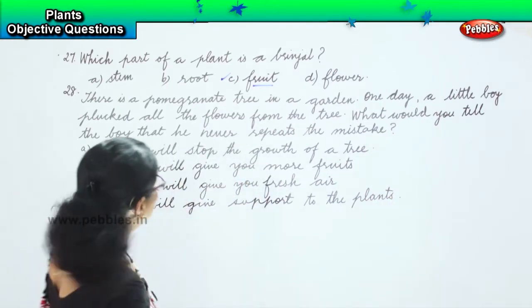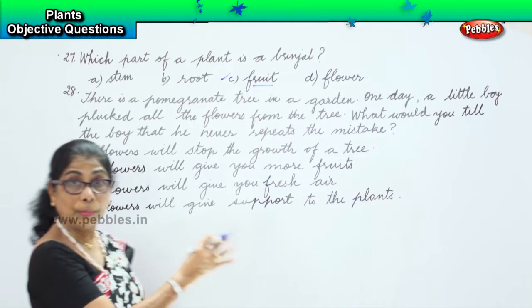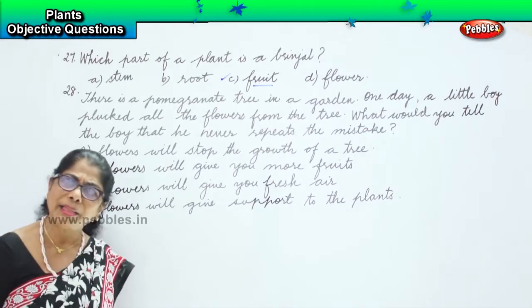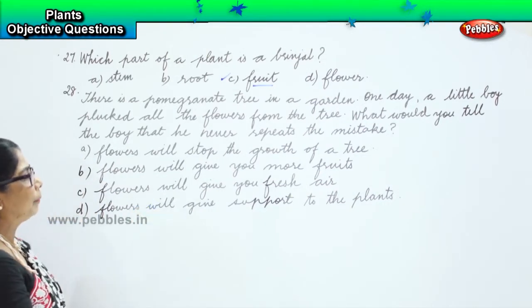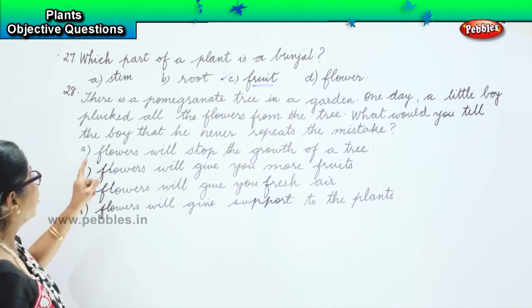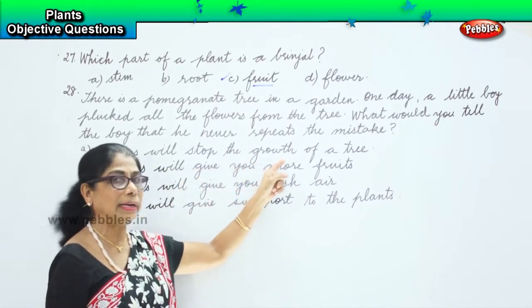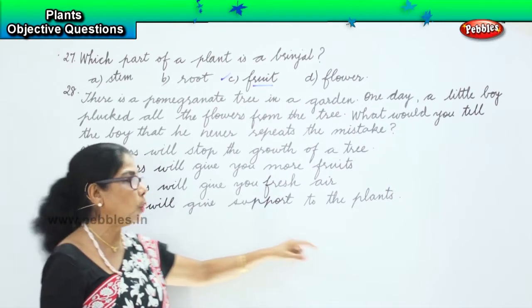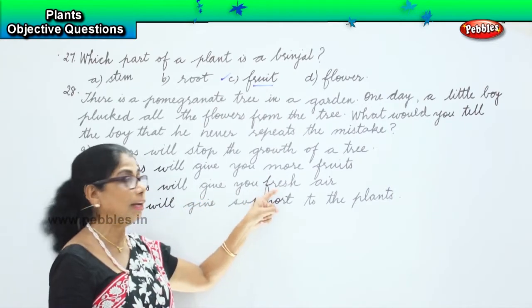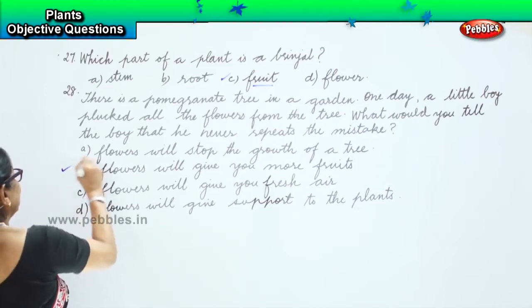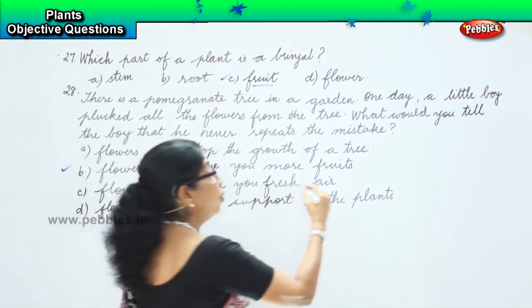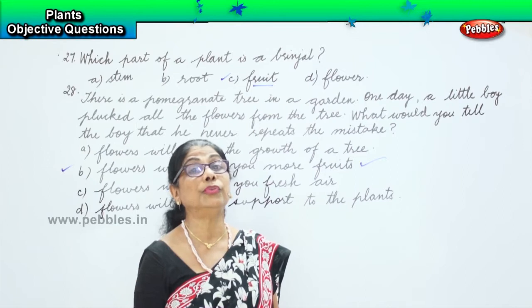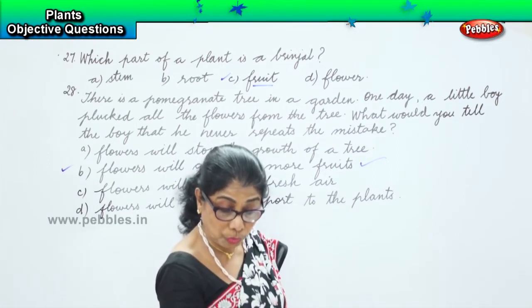Now look at the question. A little boy plucked all the flowers from a pomegranate tree. What would you tell the boy? Flowers will stop the growth of a tree — no, that's wrong. Flowers will give support to the plant — no. Flowers will give you fresh air — no. Option B says flowers will give you more fruit, and that's the answer. Tell the boy that flowers are going to give you fruit, so if you pluck the flowers, where will you get fruit from?